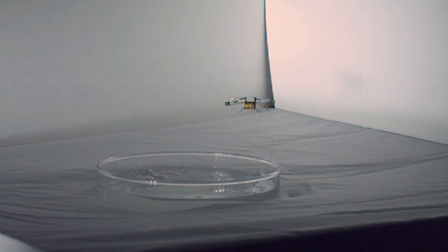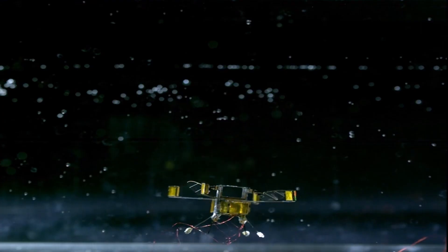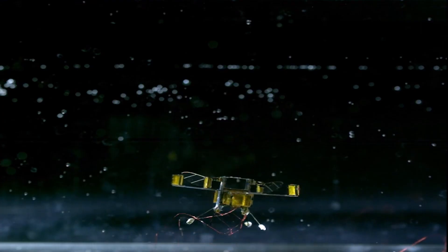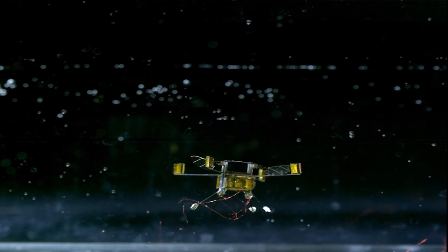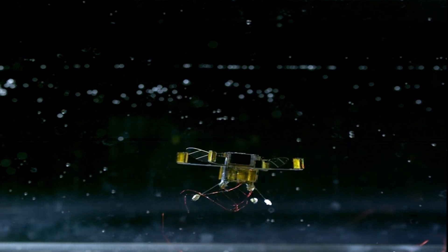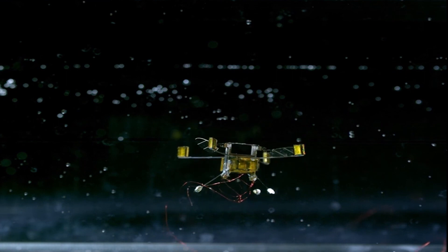But wait, there's more. The robot bee isn't limited to just pollination. Its advanced sensors and cameras enable it to gather valuable data about the environment, such as temperature, humidity, and air quality.